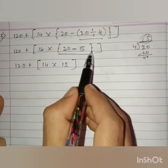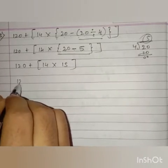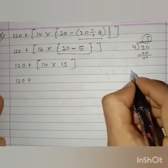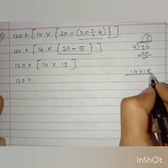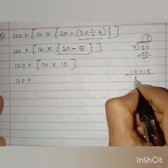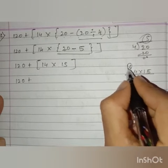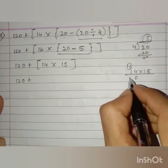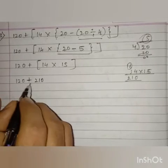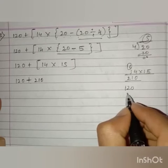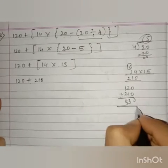After removing the curly bracket, we have to remove the big bracket. Remaining as it is: 120 plus, and then 14 into 15. Let us multiply: 15 times 4 is 60, carry 6; 15 times 1 is 15, plus 6 is 21. So we get 210. Now addition: 120 plus 210 — 0, 2 plus 1 is 3, 1 plus 2 is 3 — so we get 330 as the answer.